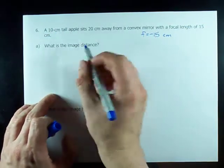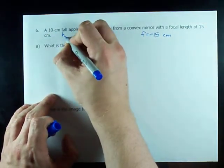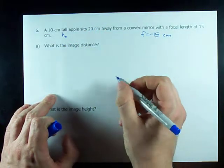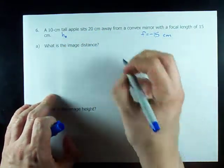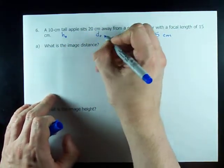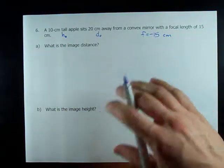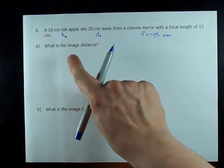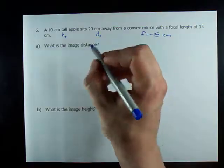It's a 10 centimeter tall apple, that's the height of my object, and it's 20 centimeters away from the mirror, that's the distance to my object. First question I'm asked about the image distance, I need d_i.